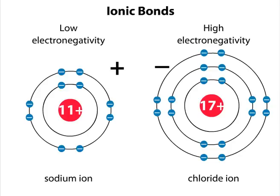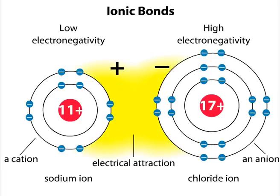Atoms that have lost or acquired electrons are called ions. Positive ions, called cations, and negative ions, called anions, form ionic bonds by an electrical attraction.